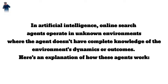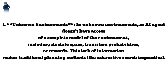In artificial intelligence, online search agents operate in unknown environments where the agent doesn't have complete knowledge of the environment's dynamics or outcomes. In unknown environments, an AI agent doesn't have access to a complete model of the environment, including its state space, transition probabilities, or rewards. This lack of information makes traditional planning methods like exhaustive search impractical.